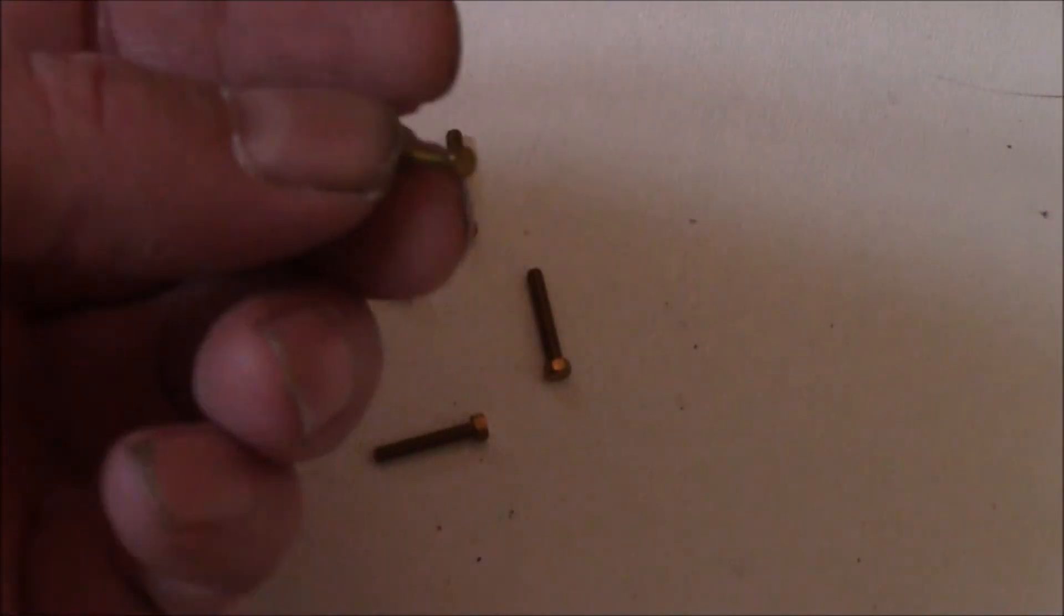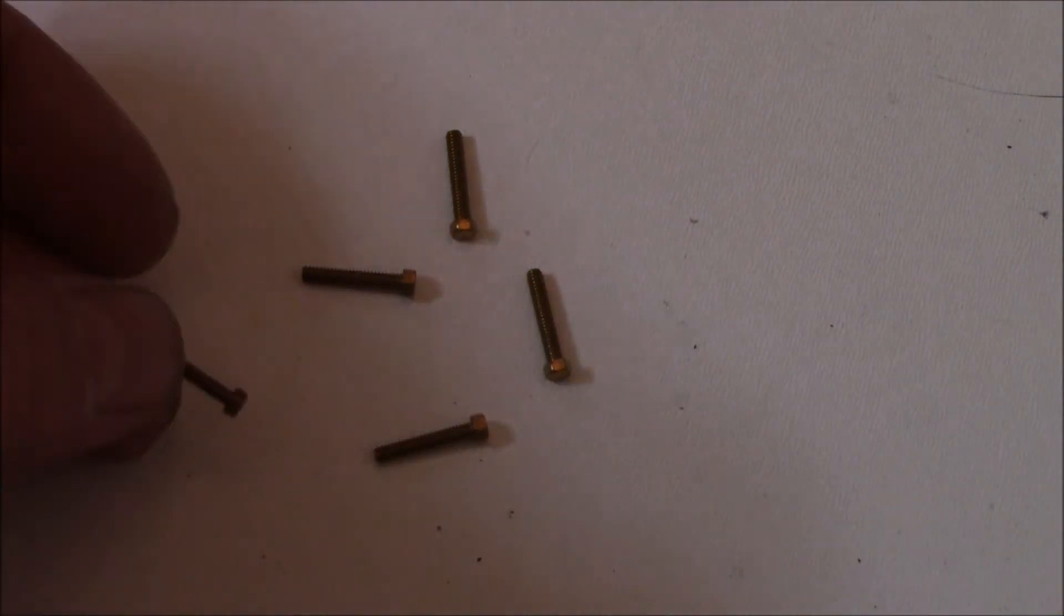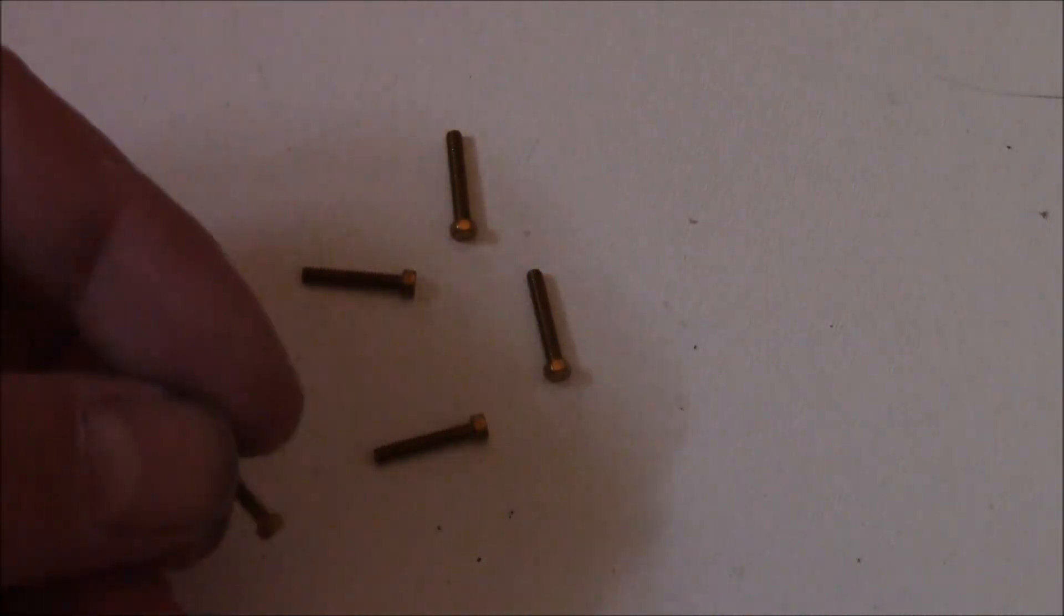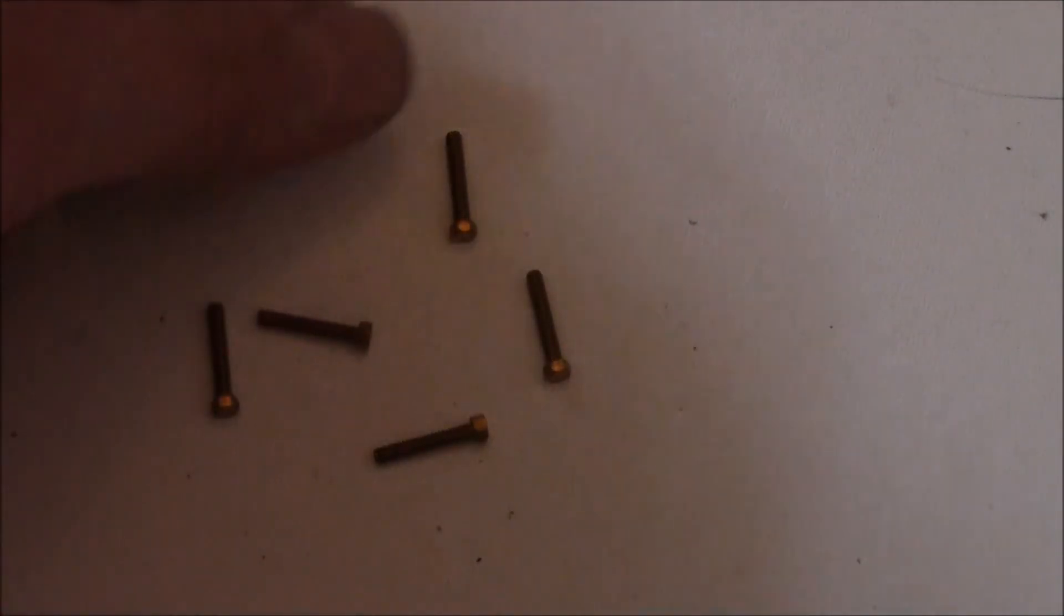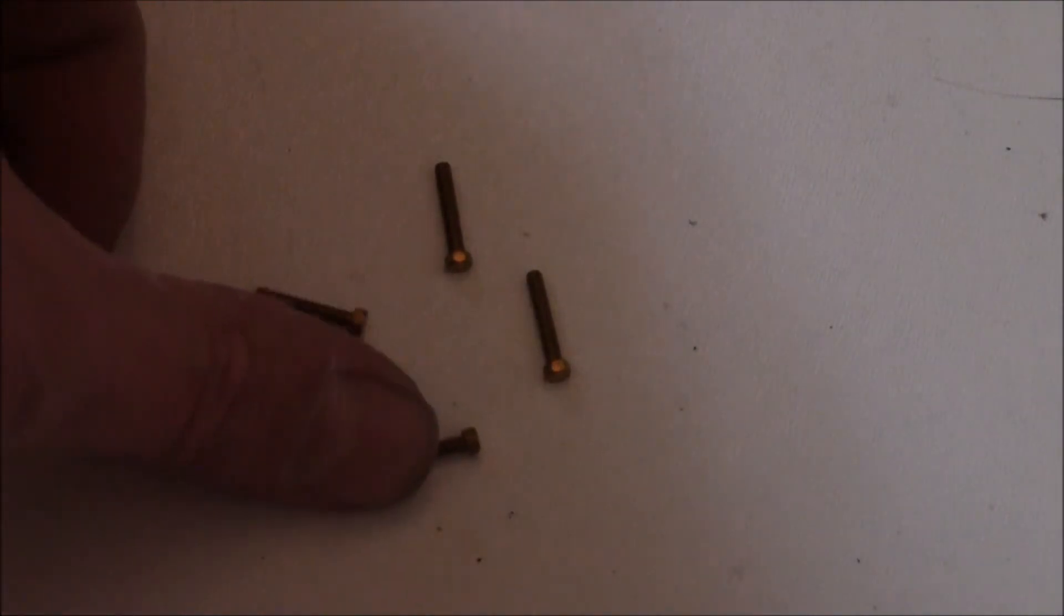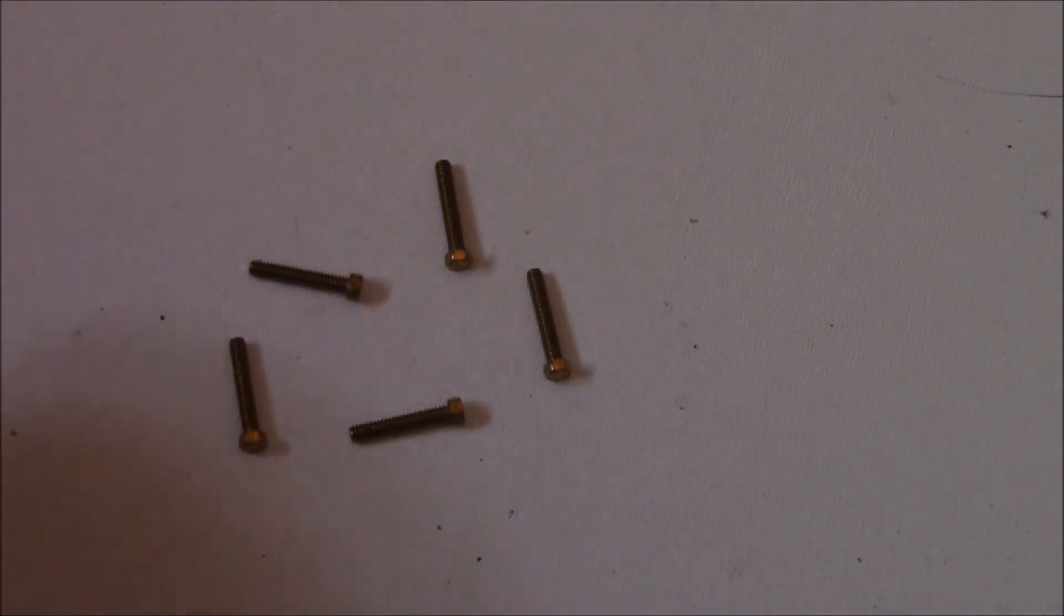This is five brass hex bolts. You guys may remember I was looking for hex head bolts for the Hetzer. This is a 2-56 by half inch hex head brass machine screw. I can get five of them at my local hobby shop in a little envelope. Can't remember the name of the company, it's something scenics. I get five of those for $4.49.